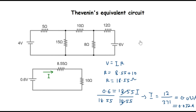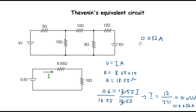Therefore the current flowing through the 10 ohms resistor is equal to 0.032 ampere. This is how to apply Thevenin's theorem. You just have to follow the steps and you will be able to find the current value. Thank you very much for watching this video.